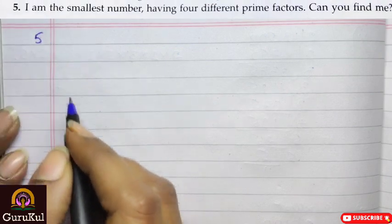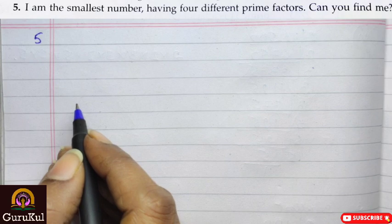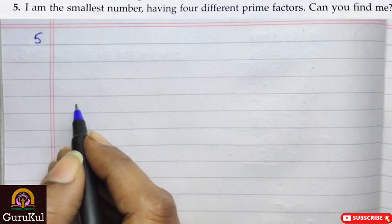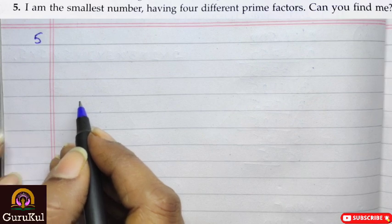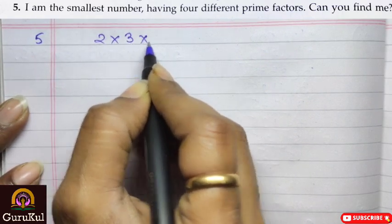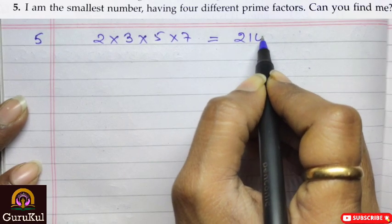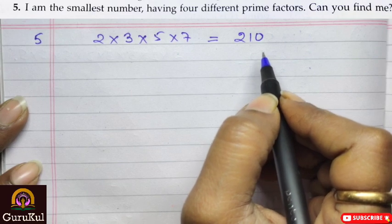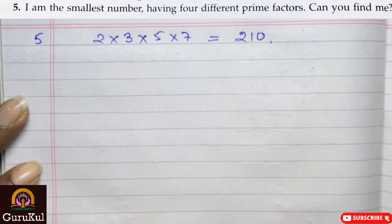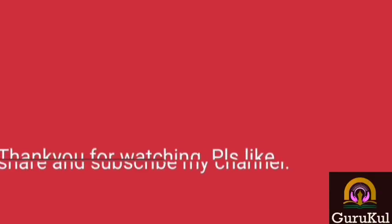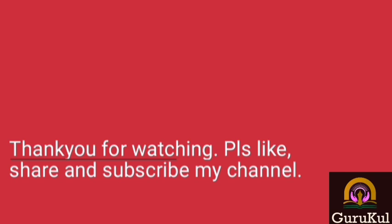Question number 5: I am the smallest number having 4 different prime factors. Can you find me? To find the smallest number with 4 different prime factors, we multiply the 4 smallest prime numbers: 2 × 3 × 5 × 7 = 210. So 210 is the smallest number having 4 different prime factors. With this we come to the end of exercise 4.3. Thanks for watching — please like, share, and subscribe to my channel and press the bell icon for every update.